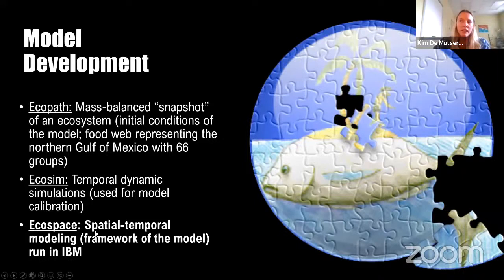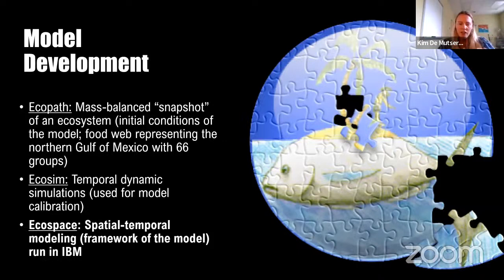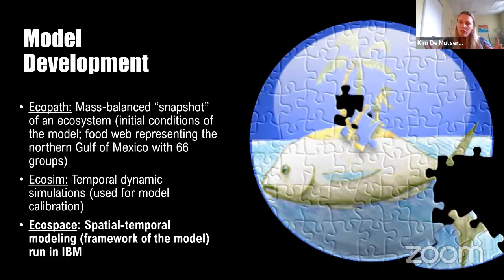With a calibrated model, we now move into Ecospace, which is a spatial temporal modeling component. This is run in IBM mode — the individual-based model. The advantage is that it really calculates mortality and how well species are doing in the specific area cells the species are in, not an average of the entire model area. Especially for these applications where you're looking at a localized stressor in your environment, it is best to run your model in individual-based mode.